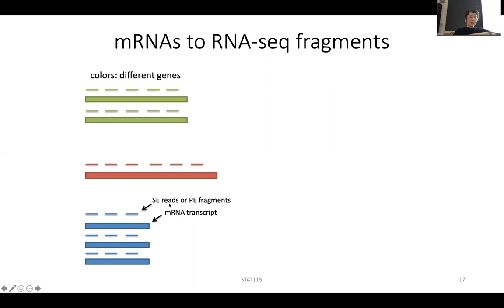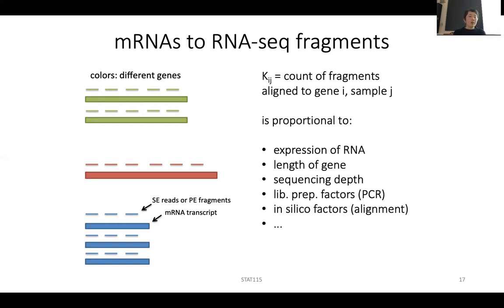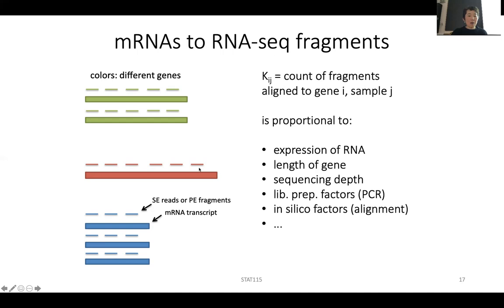It depends on whether you sequence single-end or paired-end reads. If you use K_ij, which is the count of fragments aligned to gene i for sample j, a number of factors influence this. The first is the expression of this gene — that's the thing we want to know. However, if this gene is long, there will be more reads covering this region, so you will have more reads on this gene. It also depends on how deep you sequence.